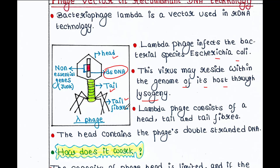When a virus infects a bacteria, its genomic material enters the bacterial cytoplasm. Inside the bacterial cytoplasm, a viral DNA can do two things: it can undergo a lytic cycle or a lysogenic cycle.